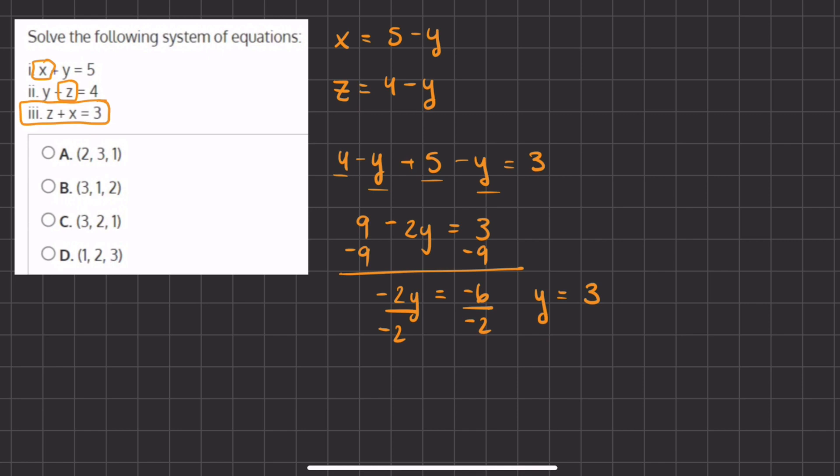So now we have the value of y, and now we just have to plug it into our first two isolated expressions. So we have x equals 5 minus y, which is 3, and so 5 minus 3 gives us 2, so that's the value of x.